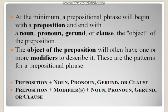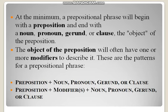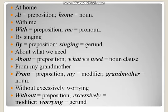At the minimum, a prepositional phrase will begin with the preposition and end with a noun, pronoun, gerund, or clause — the object of the preposition. The object of the preposition can be a noun, a pronoun, a gerund, or a clause. The object of the preposition will often have one or more modifiers to describe it. These are the patterns for a prepositional phrase: a preposition with a noun, pronoun, gerund, or clause, with optional modifiers such as adjectives in between.